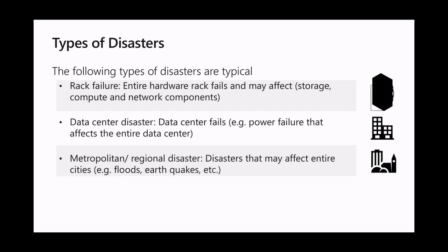More severe types of disasters are rack failures, which usually impact not just one system but multiple — for example, if the rack contains storage and network components and not only compute. Data center disasters usually impact the entire data center; there could be, for example, a natural disaster such as a storm or flooding that brings down a data center. Finally, metropolitan disasters impact a whole metropolitan area, such as earthquakes or similar magnitude events that may impact not just one data center but multiple.